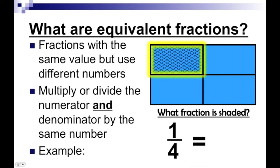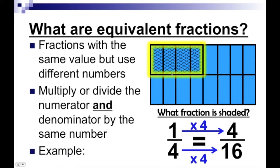We still have one-fourth shaded, but now we're going to multiply the numerator and denominator by four. Each of the pieces is now going to have four in it, giving me four-sixteenths. I now have a total of sixteen pieces. Of those, in the one-fourth, I'm going to have four of them. Again, I didn't change how big my whole was — all that's happening is I'm breaking down that whole into different-sized pieces by multiplying the numerator and denominator by the same number.